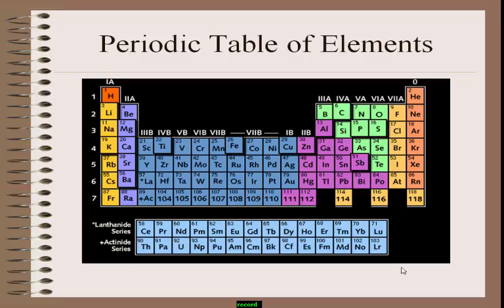Group 1 and group 2 elements belong to S block. From group 3 to group 12, elements belong to D block. Group 13 to group 18 elements belong to P block. And lanthanoids and actinoids come under F block elements.